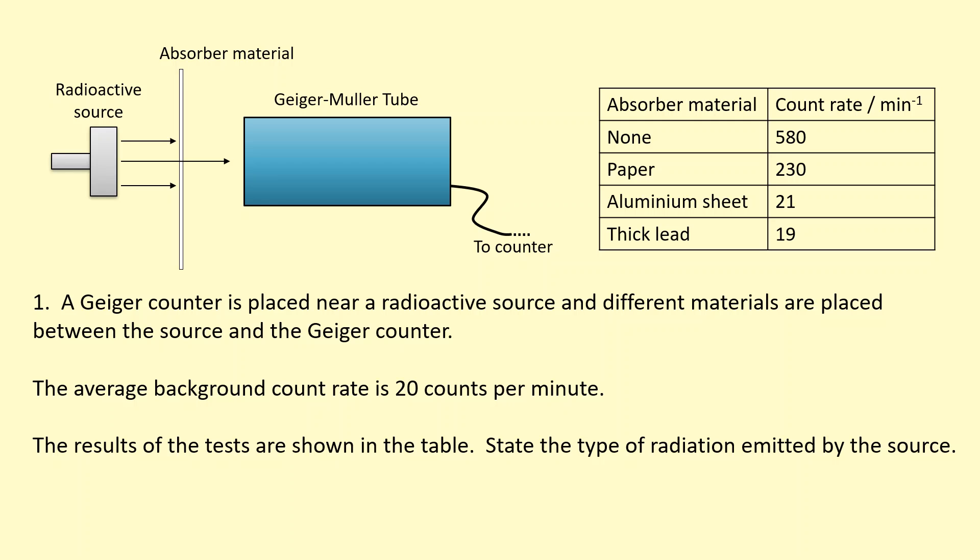But if it's too close, then there's a limit to how much the Geiger-Muller tube can measure as well. We've got an average background radiation of 20 counts per minute. Now, that's just the ionizing radiation that's in the atmosphere. So we're going to just ignore that and we're going to subtract that from our results. We're going to use this data in this table here to determine what type of radiation is being emitted.